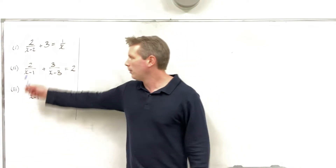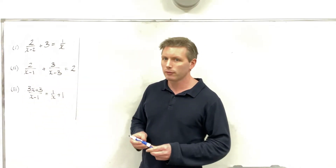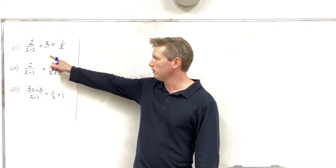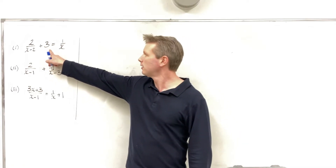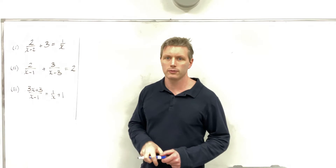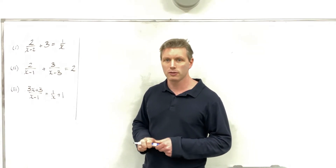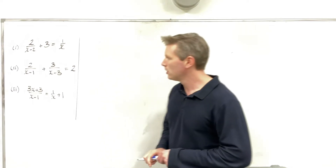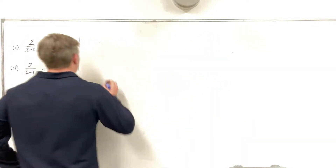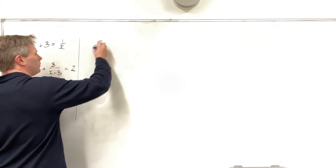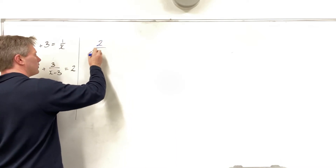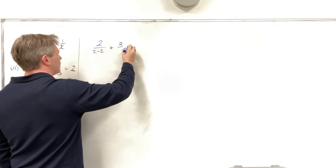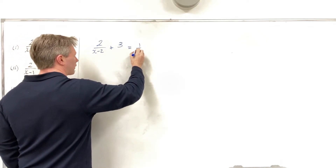Our first problem — I'm going to take these one at a time. Our first problem is 2 all over x minus 2, plus 3, is equal to 1 over x. So we're looking for the value of x, or the values of x, that will satisfy that equation. Let's get it started.